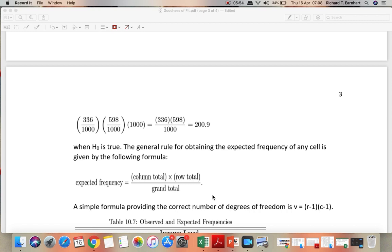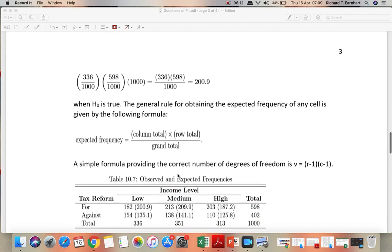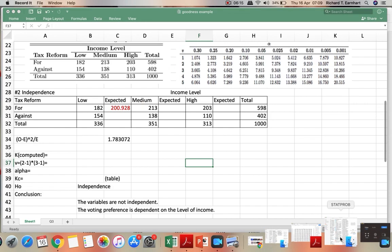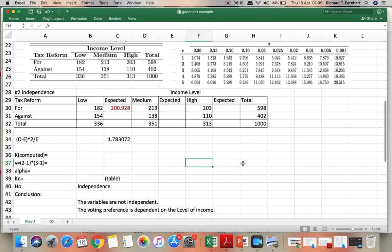The general rule for obtaining the expected frequencies of any cell could be the column total times the row total divided by the grand total. To compute for the expected frequencies, let's use the Excel to compute for the expected frequencies.